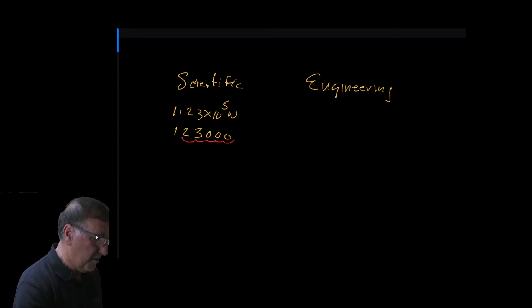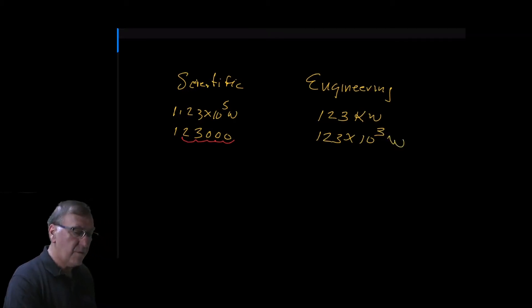In engineering notation, it would be 1.23 kilowatts. That would be one way of writing it. And it would also be 1.23 times 10 to the third watts, which is 1.23 kilowatts.